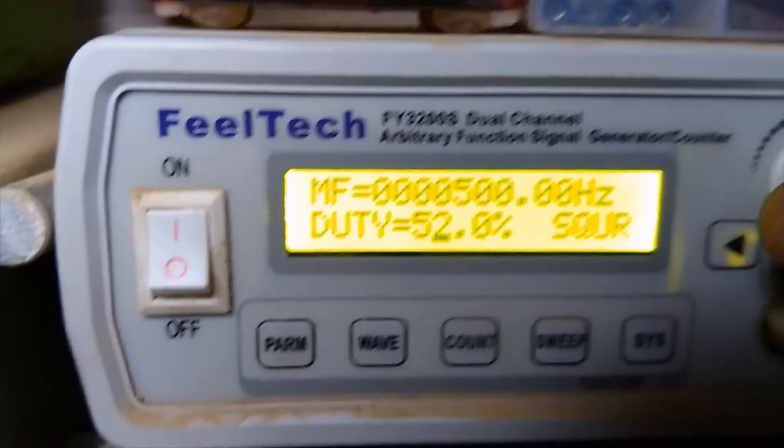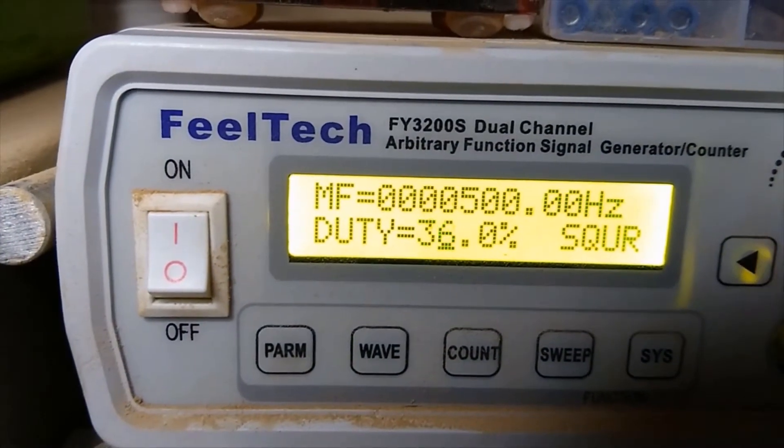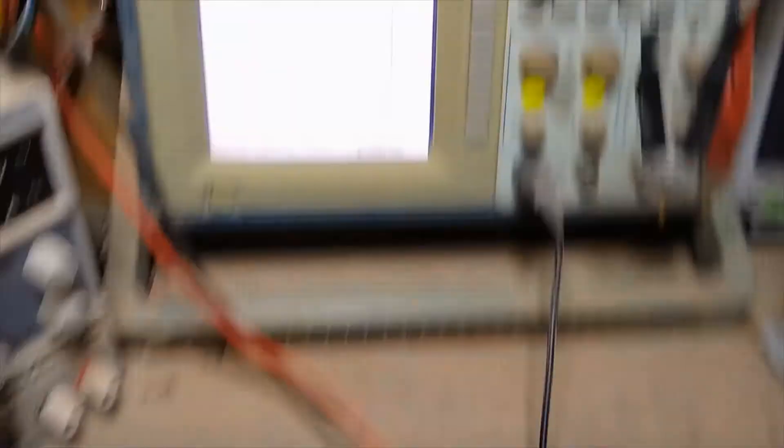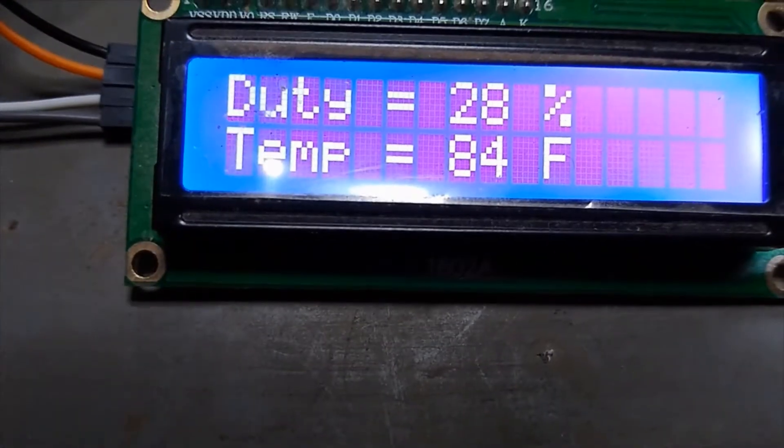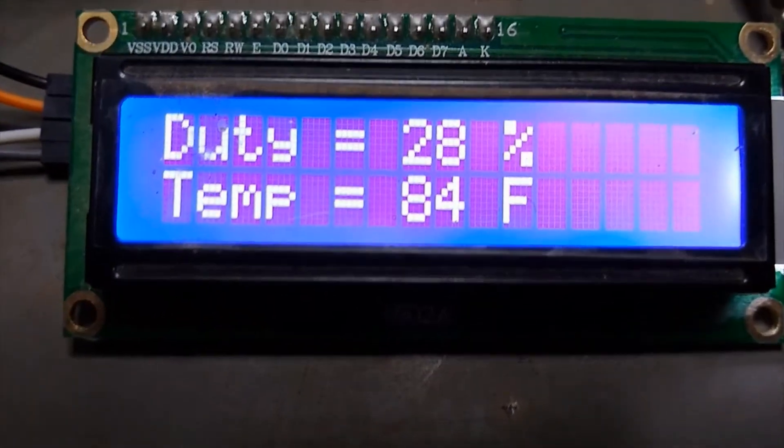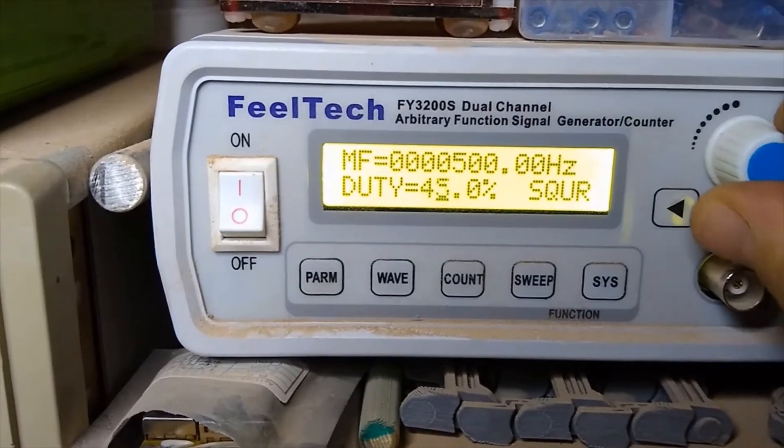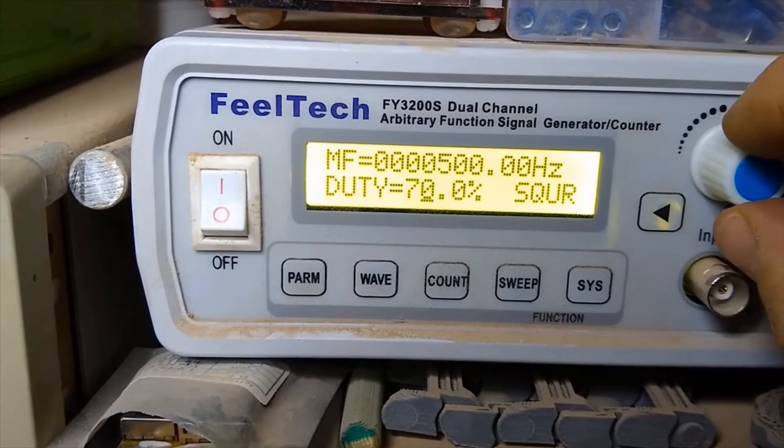So let's go down a little bit and see if we're still accurate with a 30 percent. And that's what 30 percent looks like, and 28, close enough again. And let's just go up now, 70 percent. There's 70 percent on the scope and 69, close enough.